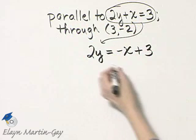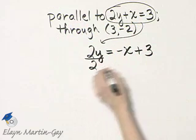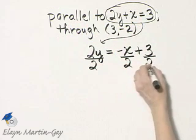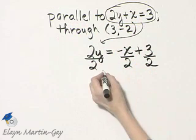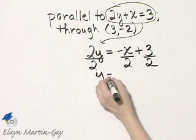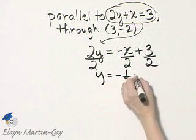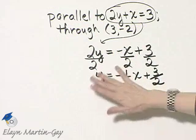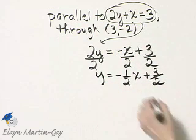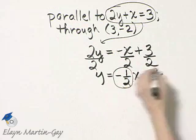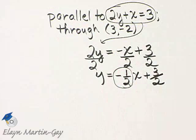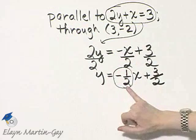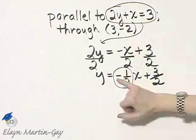And then to finish solving for y, I'll divide every single term by 2, the coefficient of y. So y is equal to negative 1 half x plus 3 halves. Remember, when an equation is solved for y, the coefficient of x is its graph's slope. So the slope of this line is negative 1 half.